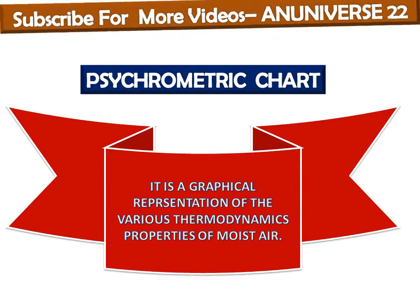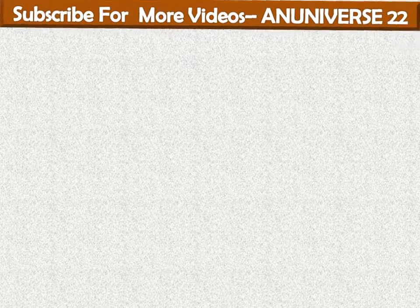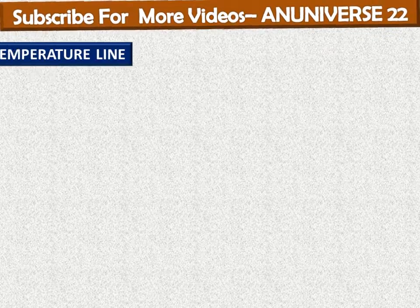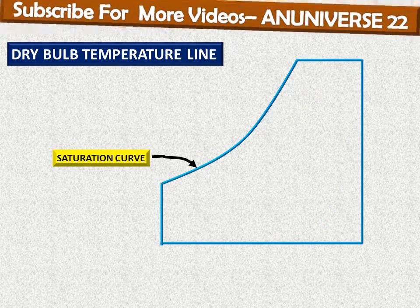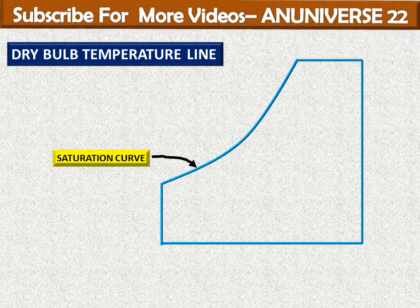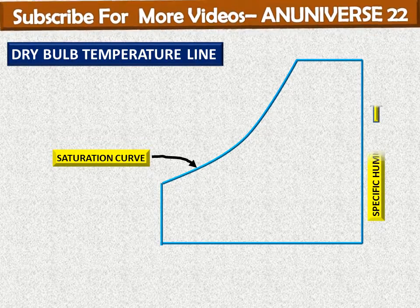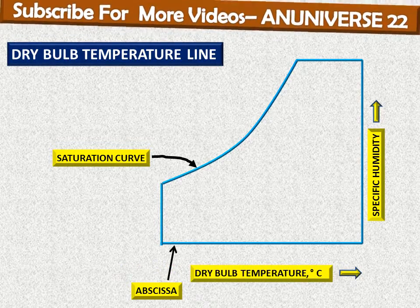The psychrometric chart is normally drawn at standard atmospheric pressure of 760 mm of mercury or 1.01325 bar. The chart has a number of lines. Dry bulb temperature is taken as the abscissa and specific humidity is taken as the ordinate.